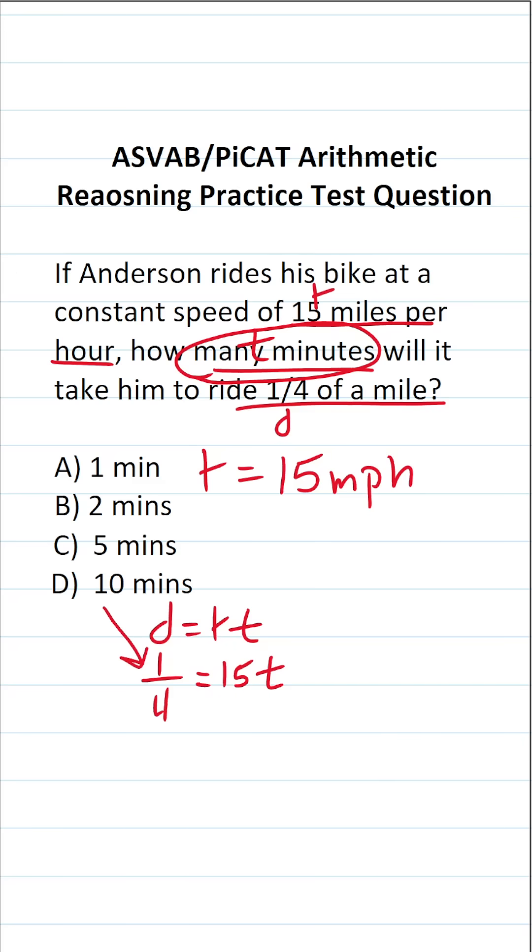If I solve this equation right here, it's going to tell me how many hours it takes him to cover that quarter of a mile. So after I solve this equation, I'm going to have to convert this answer to be in terms of minutes. So with that in mind, let's go ahead and solve this one. To get t by itself, we're going to divide both sides of the equation by 15.